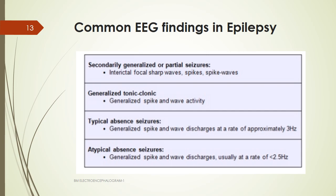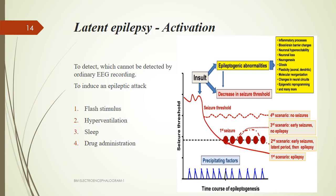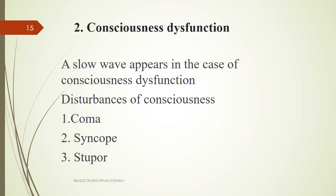To summarize common EEG findings: generalized tonic-clonic seizures show spike-and-wave activity; typical absence seizures show generalized spike-and-wave discharges and domes; partial seizures show focal sharp waves, spikes, and spike waves. Latent epilepsy cannot be recorded by an ordinary EEG, so an epileptic attack must be induced using flash stimulus, hyperventilation, sleep, or drug administration.